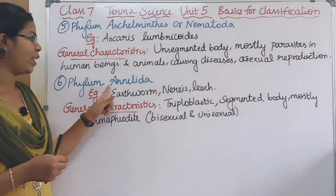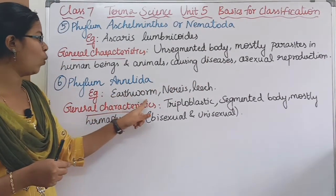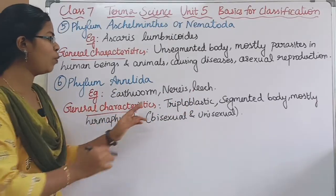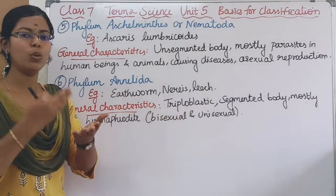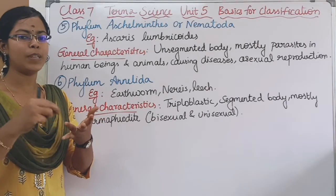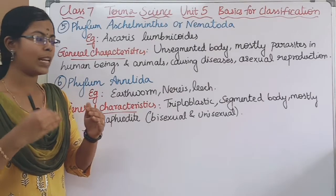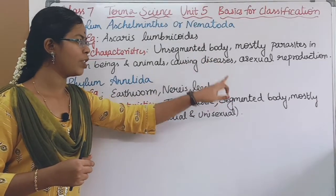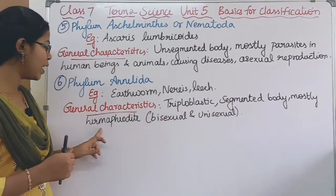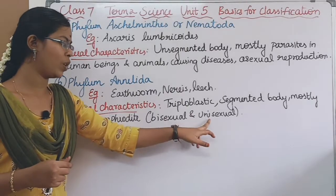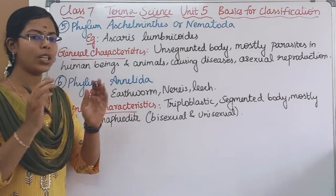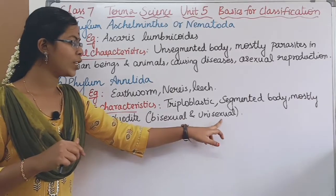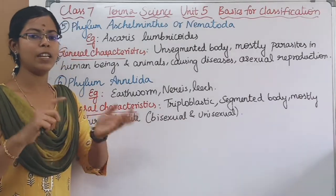The sixth phylum division is Annelida. For example, earthworm, Nereis, and leech. General characteristics: they are triploblastic — that is, cells have three layers. The body is segmented. Most are hermaphrodites, meaning bisexual. Unisexual organisms have either male or female sex organs separately.